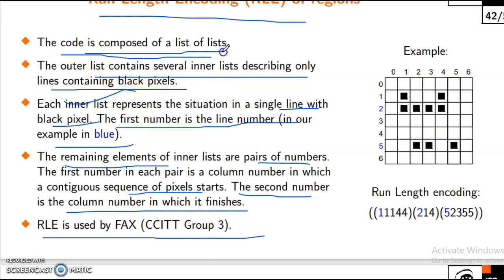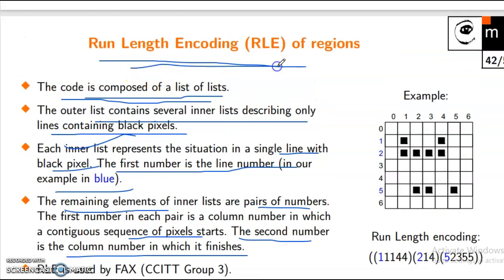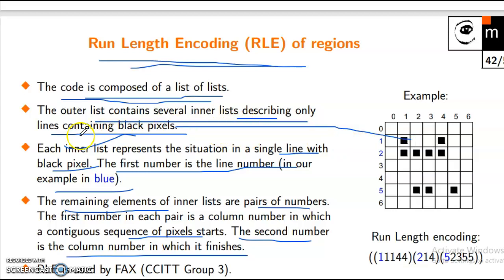The code is composed of a list of lists — run length encoding, RLE. The outer list contains several inner lists, describing only lines containing black pixels. Each inner list represents the situation in a single line with black pixels.